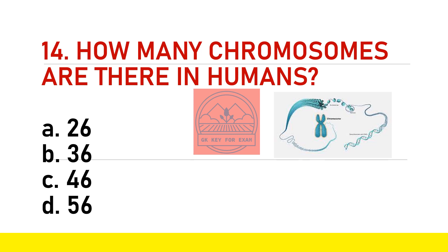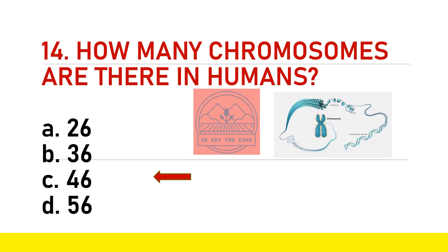The next question is: how many chromosomes are there in humans? The options are A) 26, B) 36, C) 46, or D) 56. The answer is C) 46.